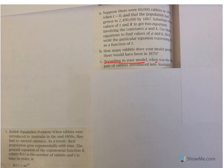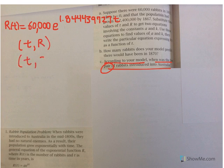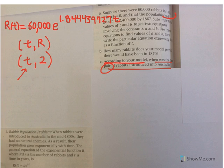Now part c: according to your model, when was the first pair of rabbits introduced into Australia? The first pair means there were 2 rabbits. So we want to know at what time the population of rabbits was equal to 2. It would be before 1865 because by 1865 we already had 60,000 rabbits, so we'll get a negative value for t, interpreted as the number of years before 1865.